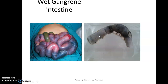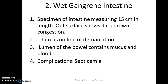Examples of wet gangrene include the diabetic foot and the intestine. When describing the specimen: specimen of intestine measuring 15 cm in length, outer surface shows dark brown congestion, no line of demarcation, lumen of the bowel contains mucus and blood. Complication: septicemia.